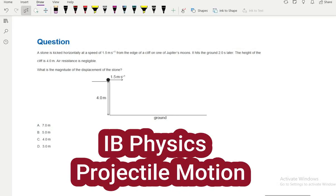Hello, this is an IB physics question about projectile motion. Here we have a stone that is going to be kicked with an initial velocity of 1.5 meters per second, and it hits the ground after 2 seconds.